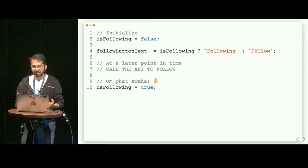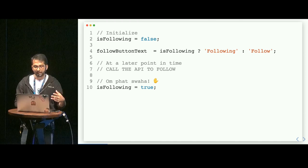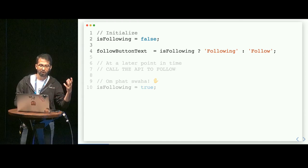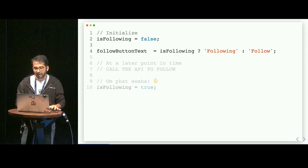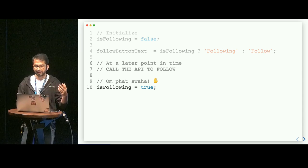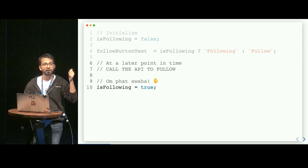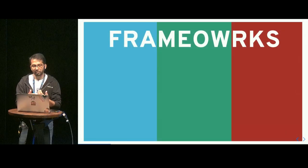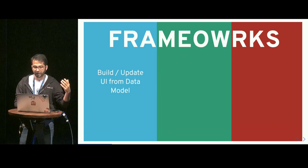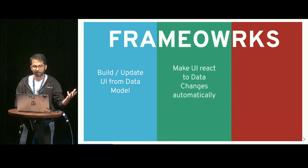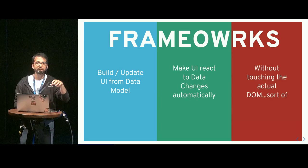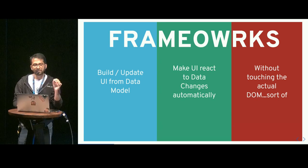What made the text change from Follow to Following? We can imagine that behind the scenes in Twitter's UI code, this may have happened: they initialize `isFollowing` to false and calculate the follow button text based on whether or not we are following. After sending an API request and getting a success, they change `isFollowing` to true — and voila, the UI is updated. That is what pretty much any major framework allows us to do: build, modify, update, and change our UIs from data declaratively.